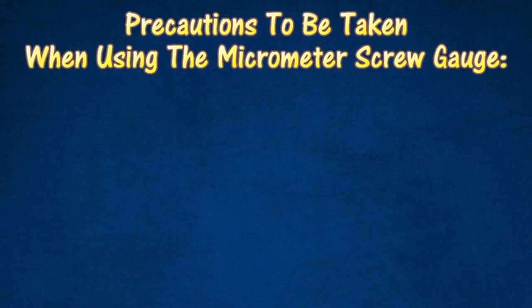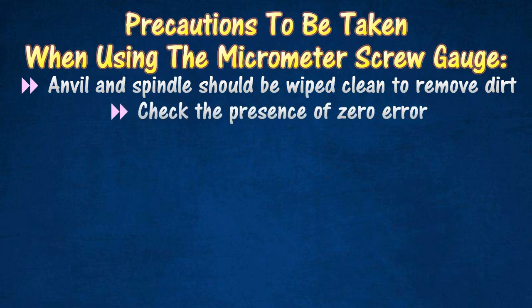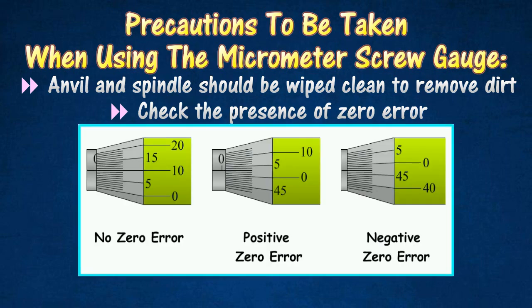For using the micrometer screw gauge, the faces of the anvil and the spindle should be wiped clean to remove dirt particles, which may affect the readings of the micrometer. The spindle must be moved towards the anvil, with nothing between them to check for the presence of zero error. The following table shows three possible situations of zero error of micrometer screw gauge.